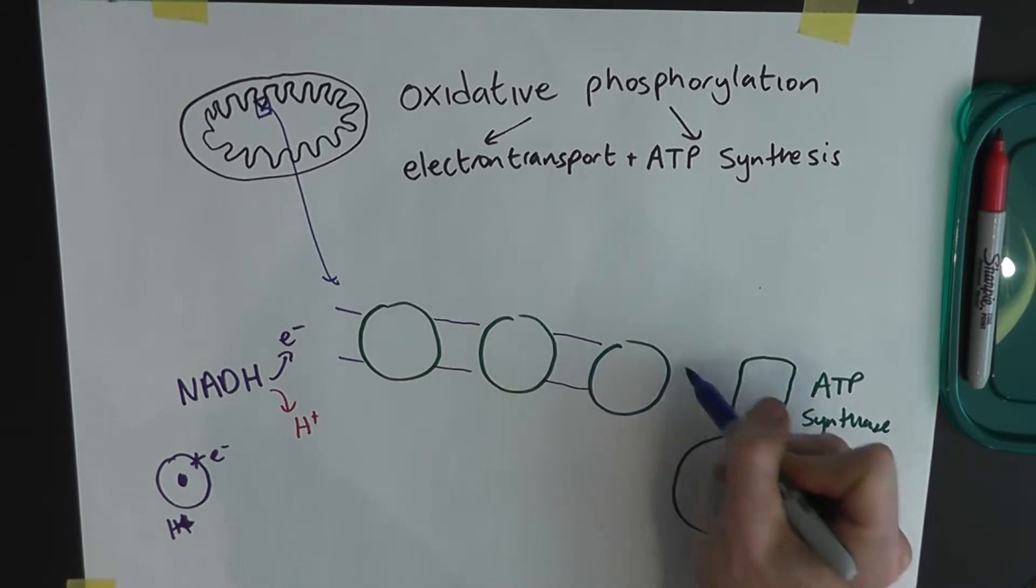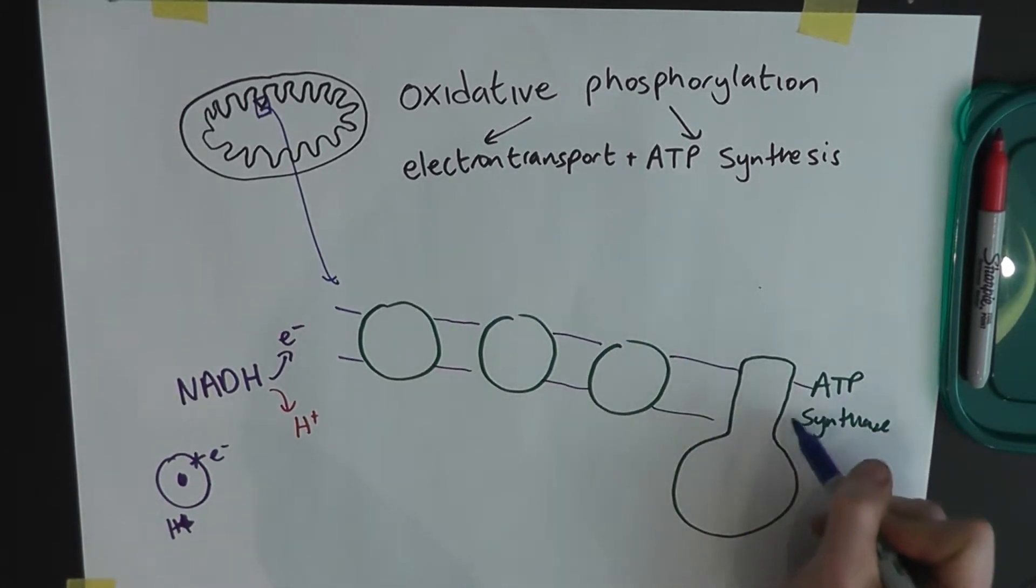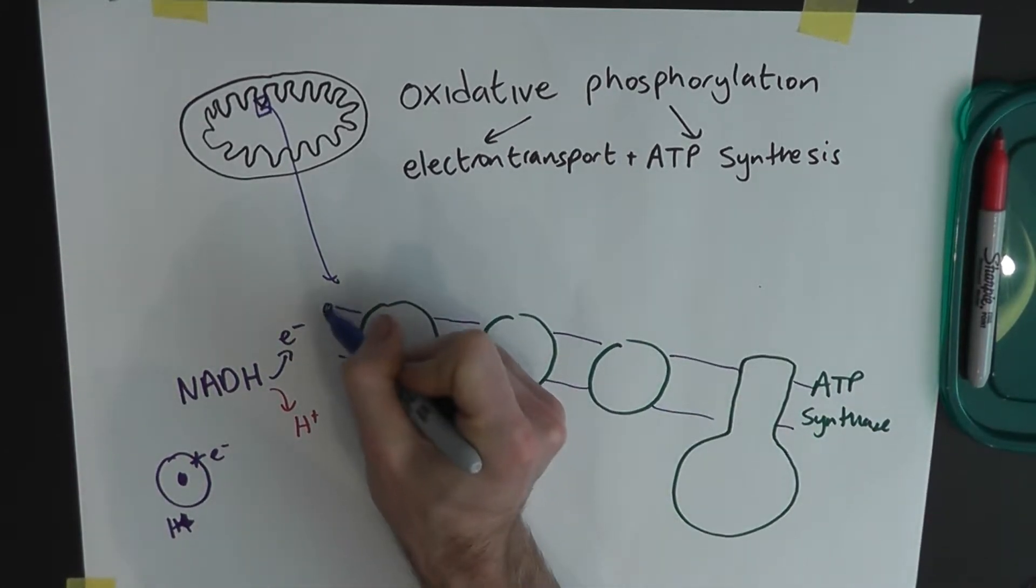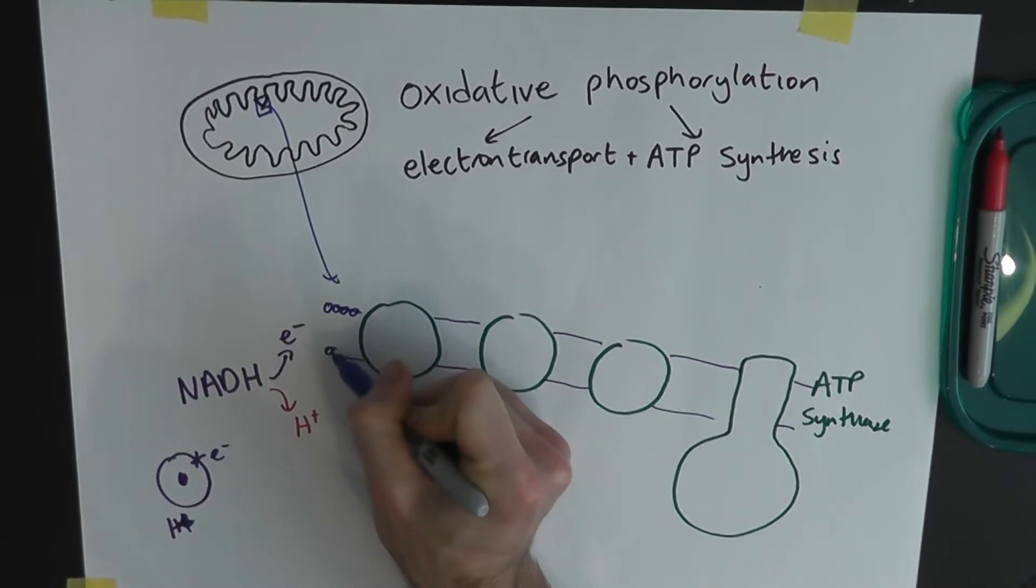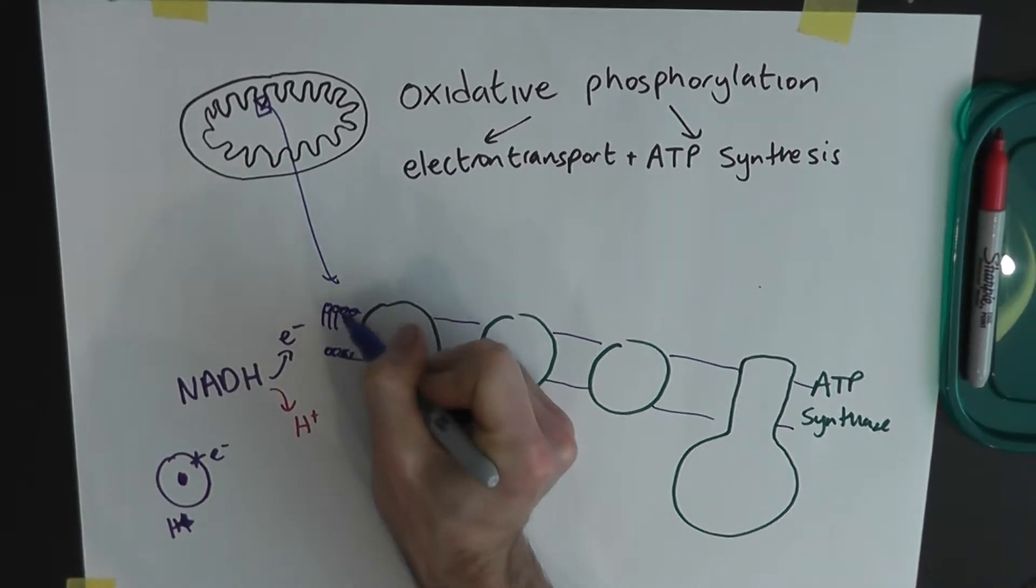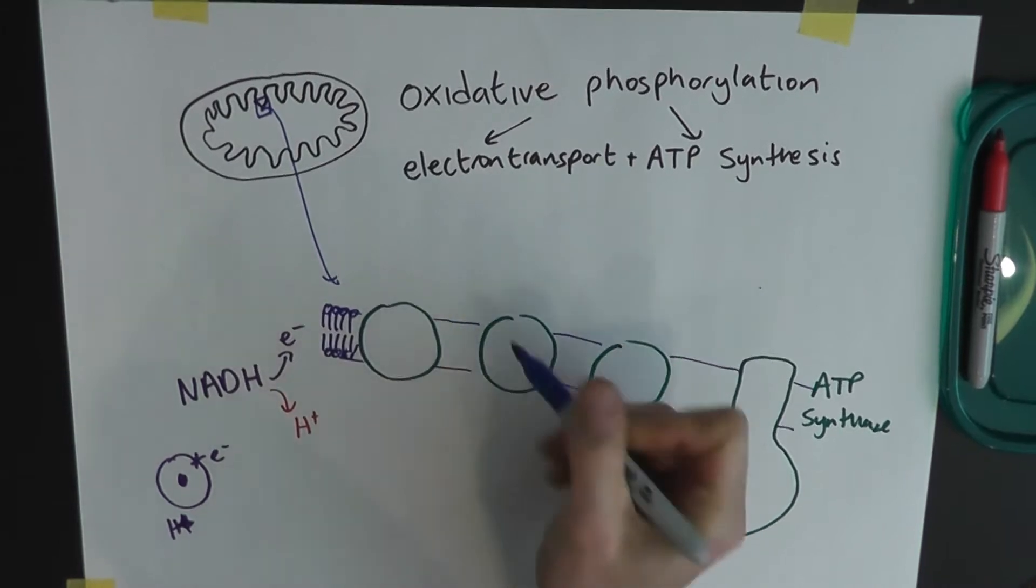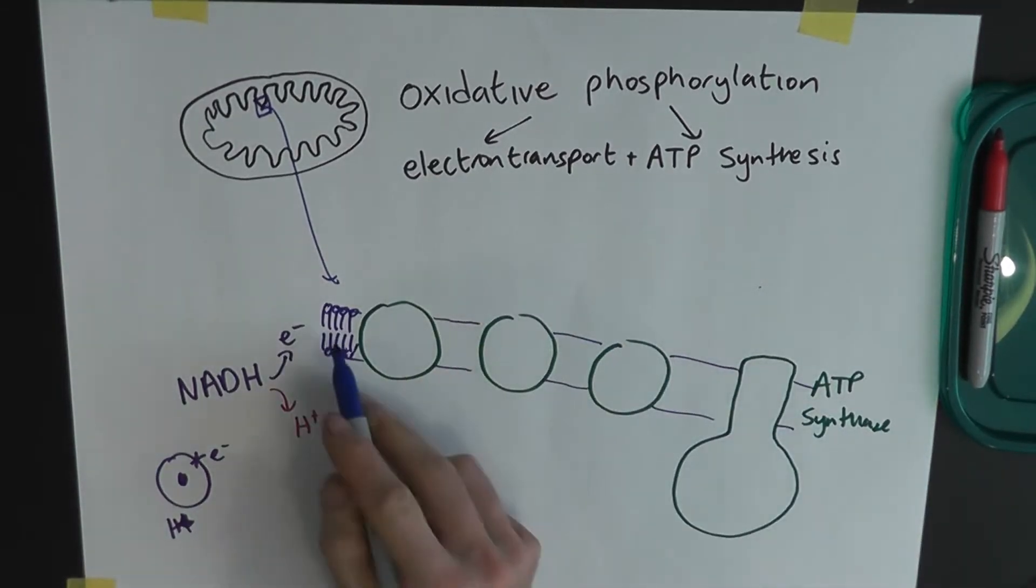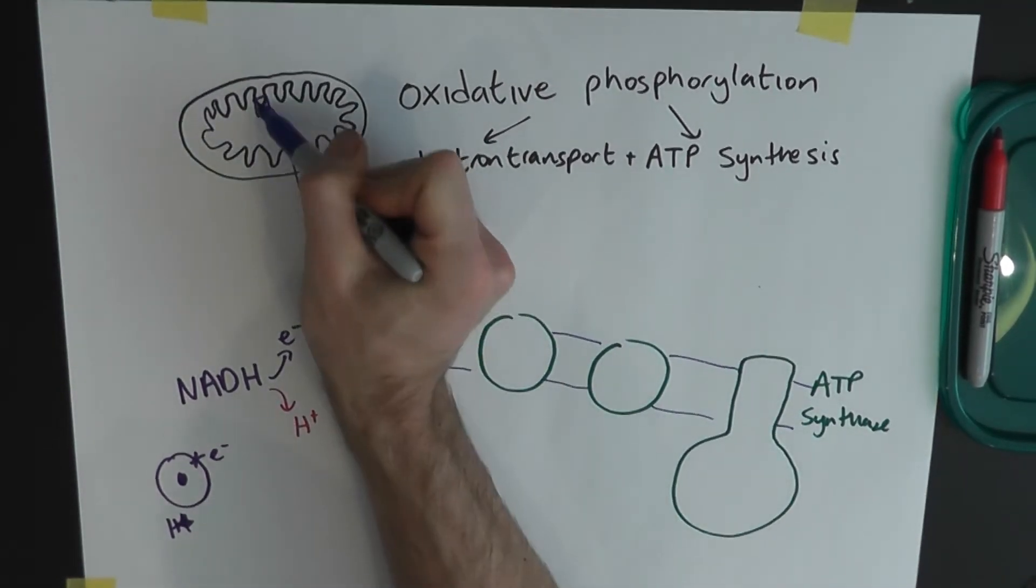So this is the inner membrane. I'll just draw a few phospholipids here, just for the sake of completeness. I'm not going to draw them all the way along. But just so you get the point that that is actually this membrane up here.